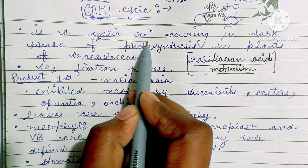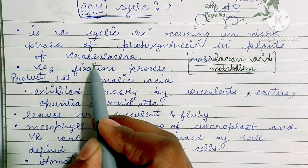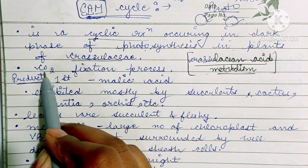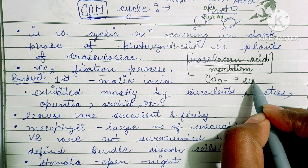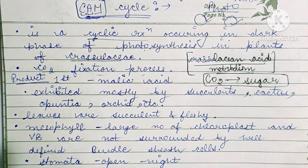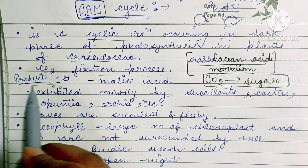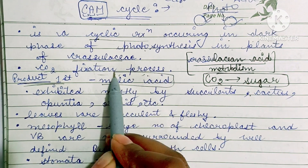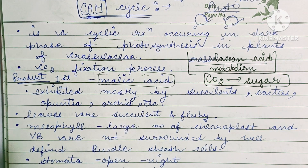This is a cyclic reaction occurring in the dark phase of photosynthesis in plants of Crassulaceae. In this process, carbon fixation occurs, in which carbon is fixed into sugar molecules which are consumed by the plants. The first stable compound formed during the CAM cycle is malic acid.